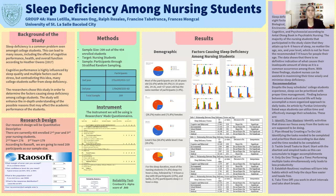For the recommendation: despite the busy schedules college students experience, sleep can be prioritized with proper time management. Finding balance between school and social life will help accomplish a more organized approach to daily tasks. An article by Purdue University listed ways students can utilize time and effectively manage their schedules. Number one: identify time wasters — identify activities that draw focus away from the tasks we are supposed to be doing. Number two: plan ahead by creating a to-do list, identifying tasks needed to be completed and prioritizing them by date. Number three: tackle small tasks first — start with the shortest and simplest tasks as these can accumulate to bigger accomplishments.